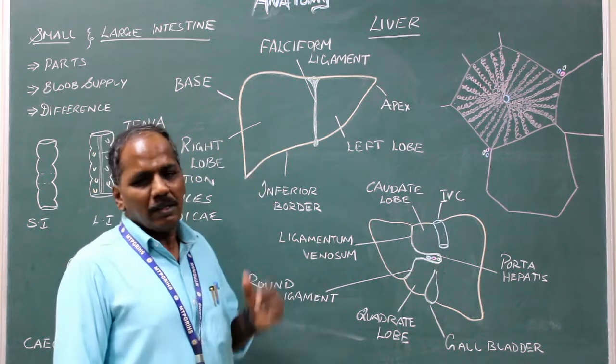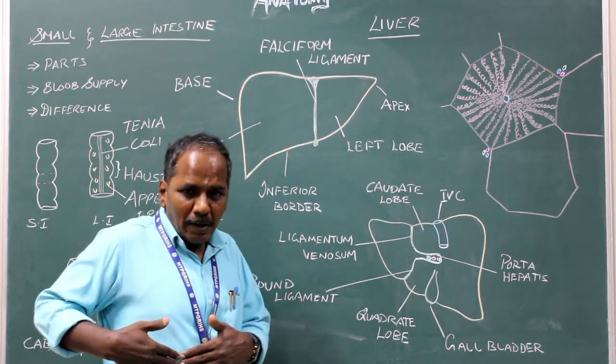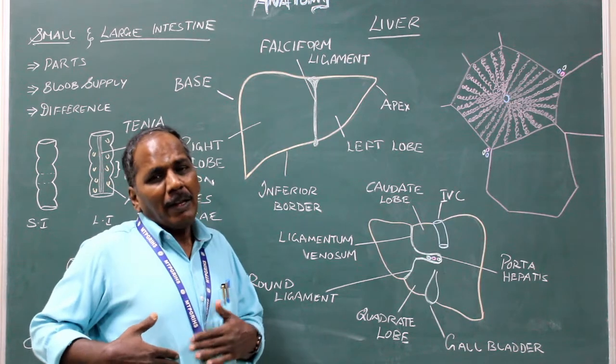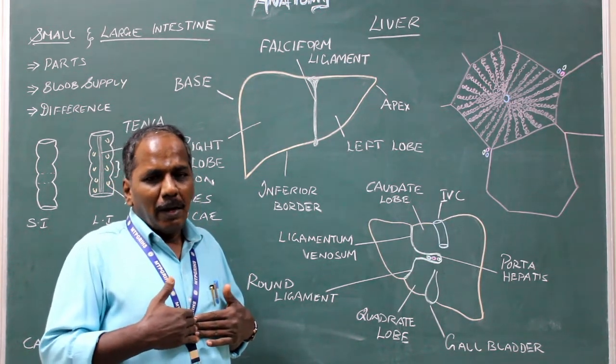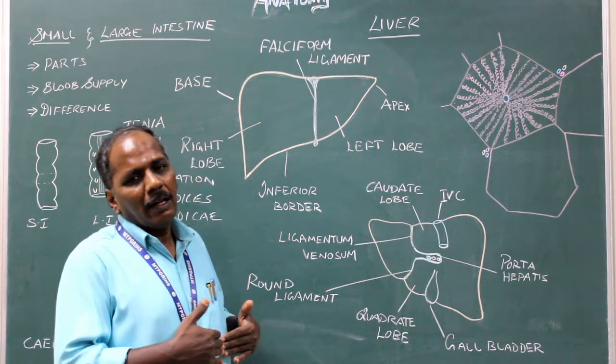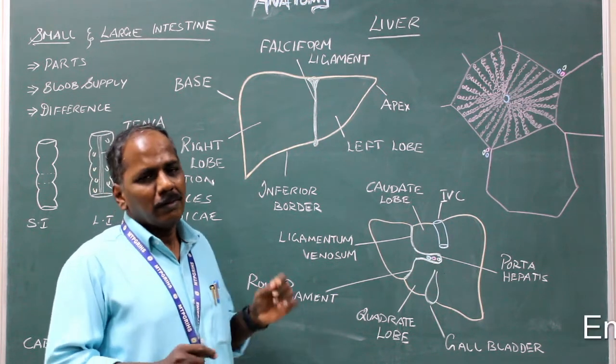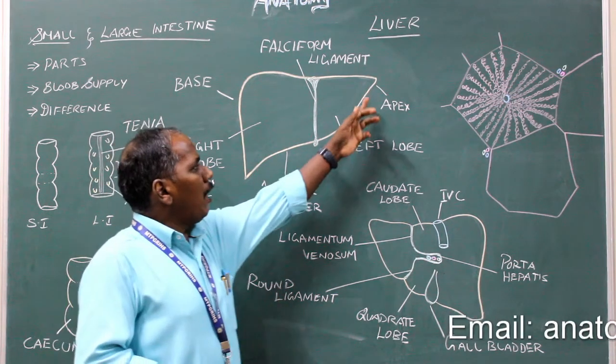Situation: It is situated mainly in the right hypochondrium and extends into epigastric and left hypochondrium. Parts: It has an apex.